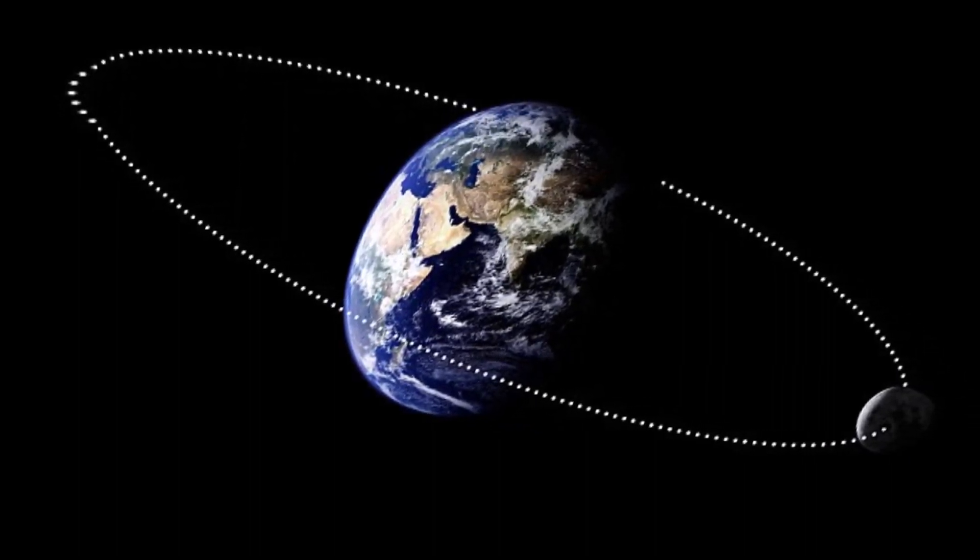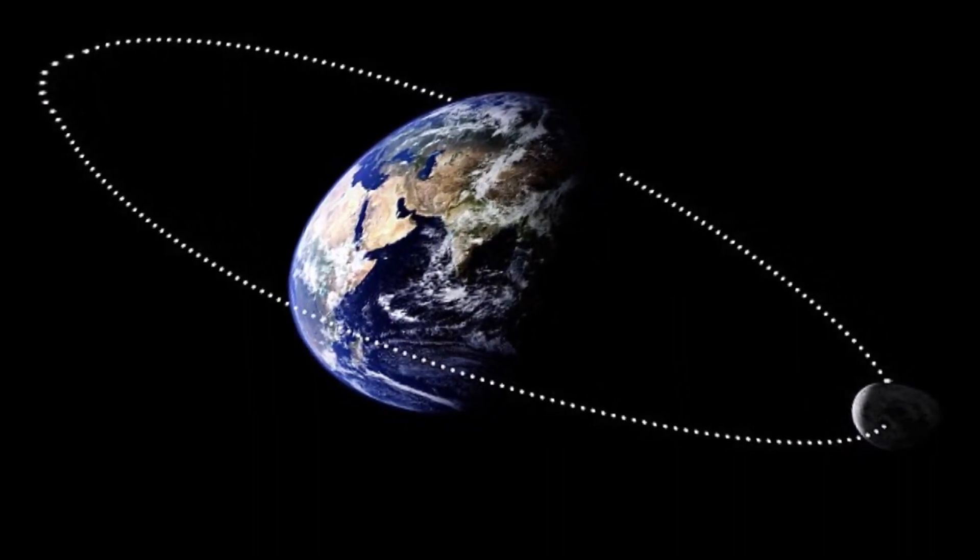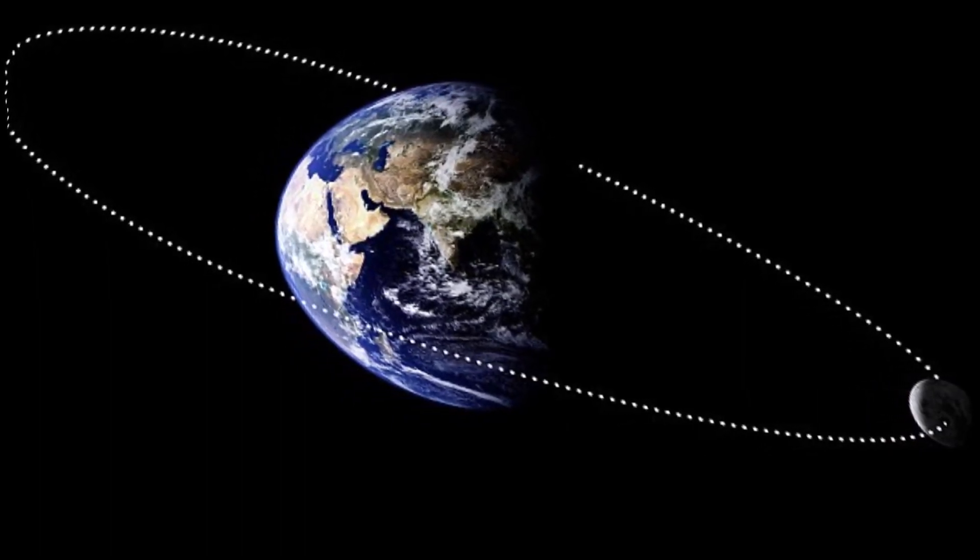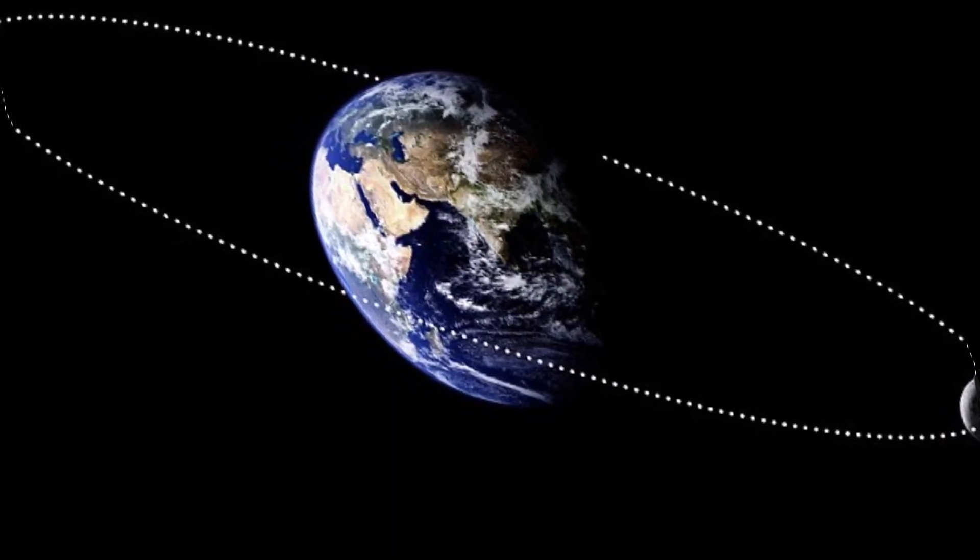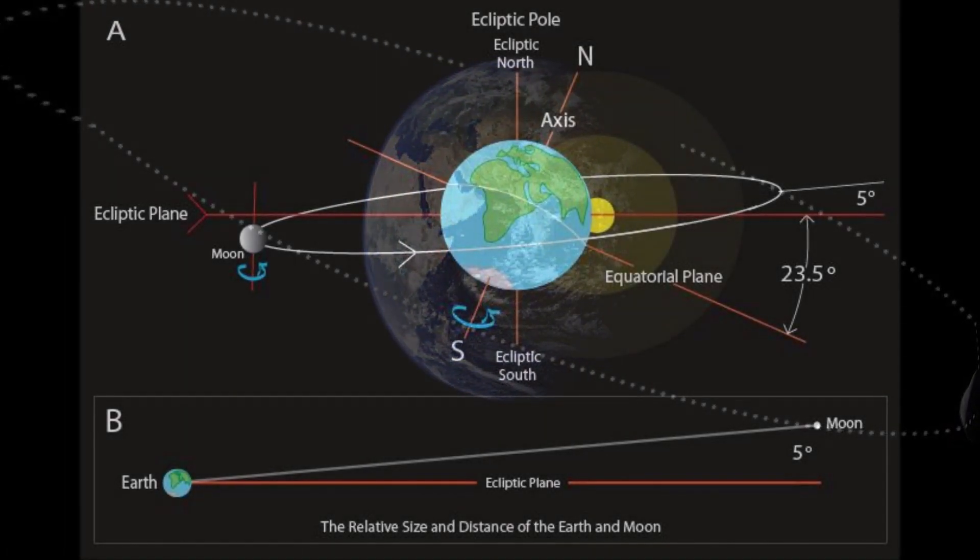Do you know that we have to have the Moon exactly where it's at? If we did not have the Moon exactly where it were at, do you know what would happen to this planet? Every, I forget what the frequency is, but it's less than 100 years. Because the Earth is tilted at a 23 degree axis, if the Moon were not there, the axis would flip.